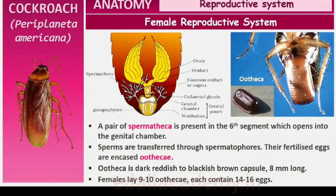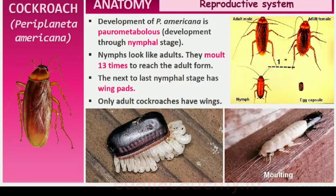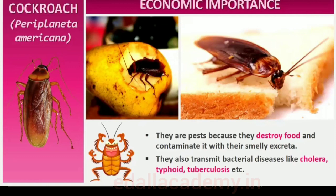The development of P. americana is paurometabolous, meaning there is development through a nymphal stage. The nymphs look very much like adults. The nymph grows by molting about 13 times to reach the adult form. The next-to-last nymphal stage has wing pads but only adult cockroaches have wings. Many species of cockroaches are wild and are of no economic importance. A few species thrive in and around human habitats. They are pests because they destroy food and contaminate it with their smelly excreta. They can transmit a variety of bacterial diseases by contaminating food material.